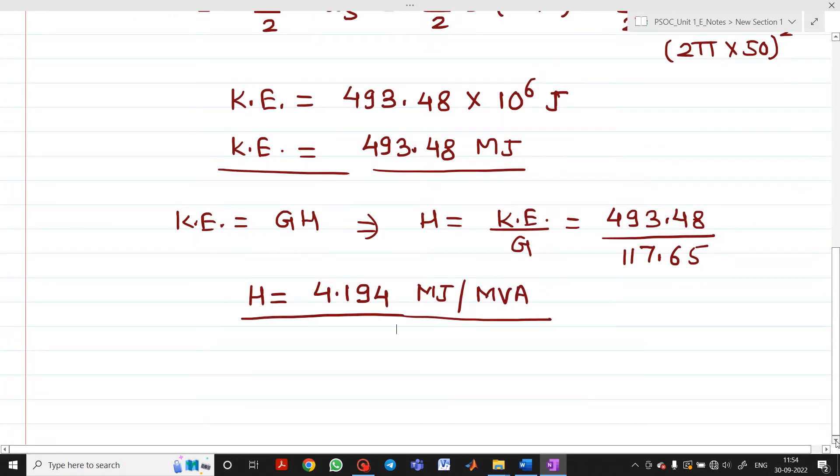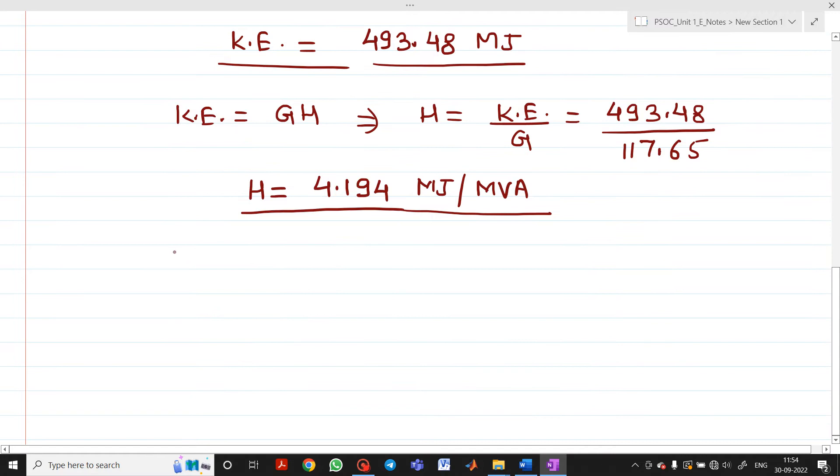Next we have to determine the moment of inertia or angular momentum M. The formula is G H divided by pi f. G is 117.65 times H which is 4.194 divided by pi times f.